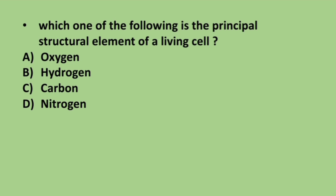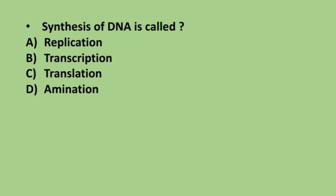Next question: which of the following is the principal structural element of a living cell? Options are oxygen, hydrogen, carbon, and nitrogen. The principal structural element of a living cell is carbon, option C.